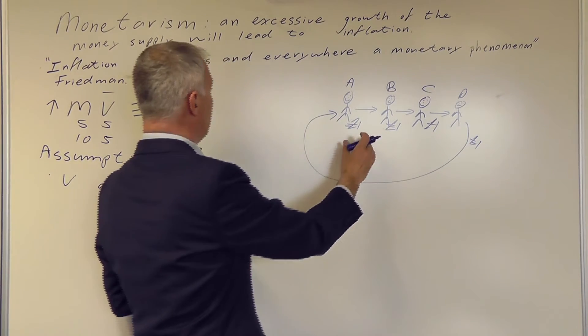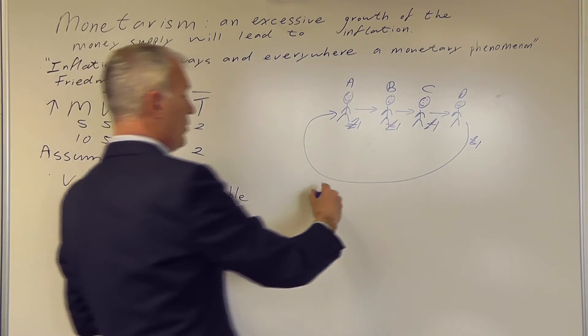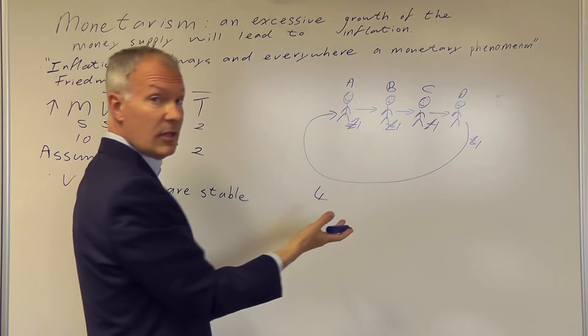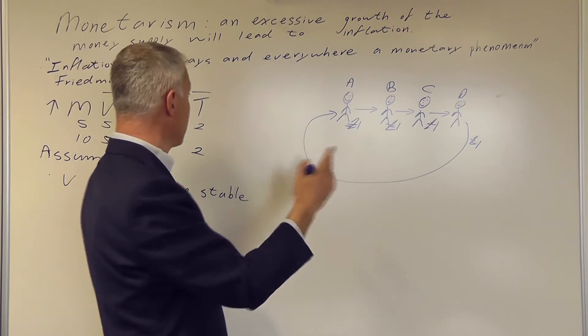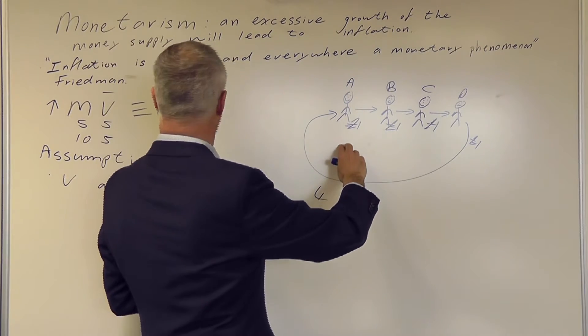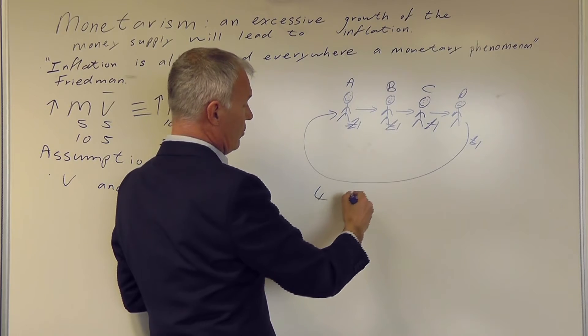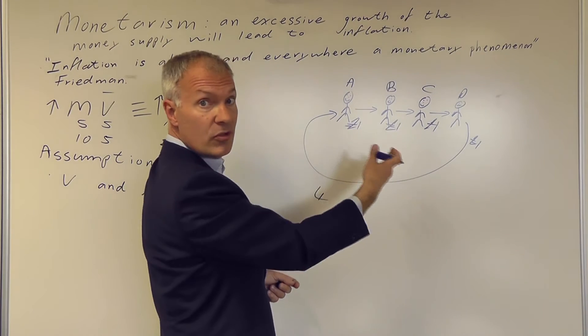So they each pass on £1. So the total money supply in this economy will be £4. Say they buy one product.